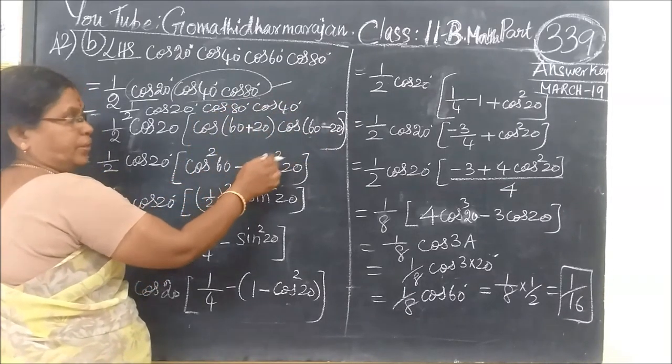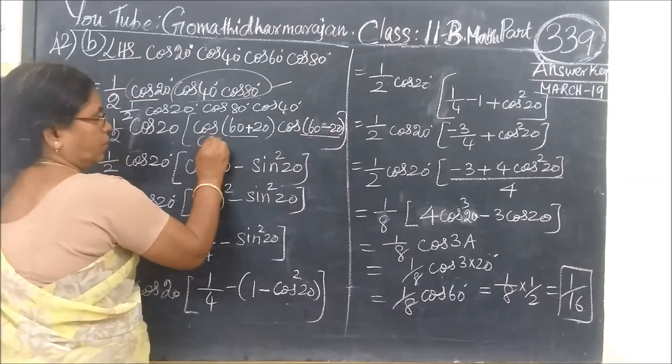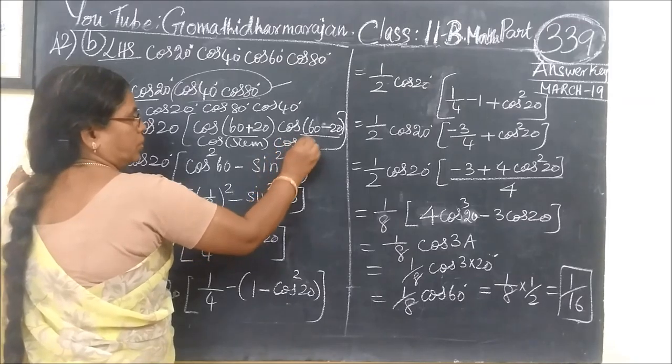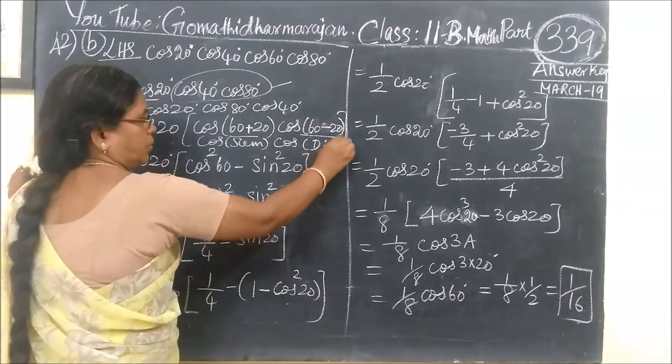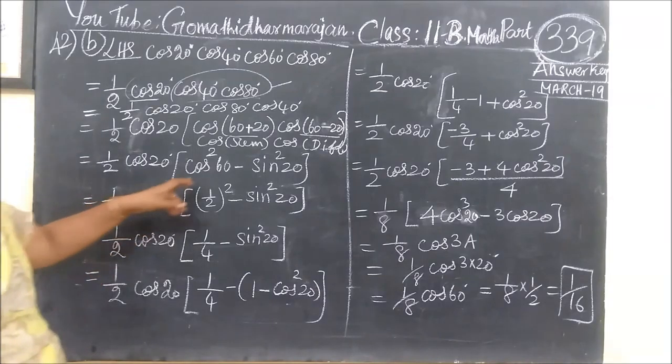So we add and separate. What formula do we use? We use the cos squared a minus sin squared a formula. This is the formula we'll apply here.